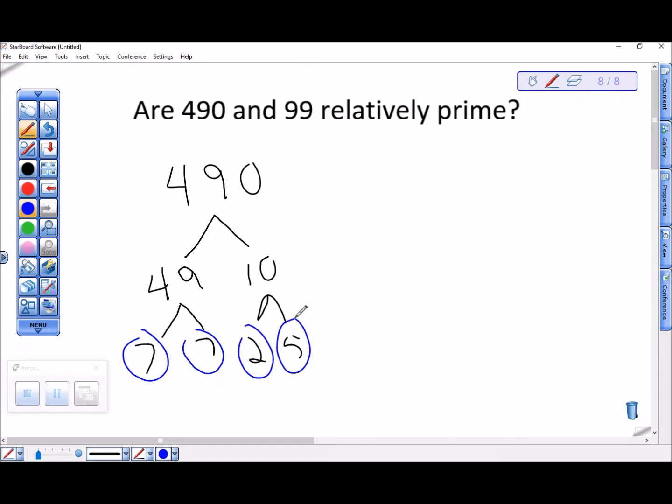And I could probably stop here and say, well, can I divide 99 by 7? No. 2? No. 5? No. So they are relatively prime. But just for completeness sake,